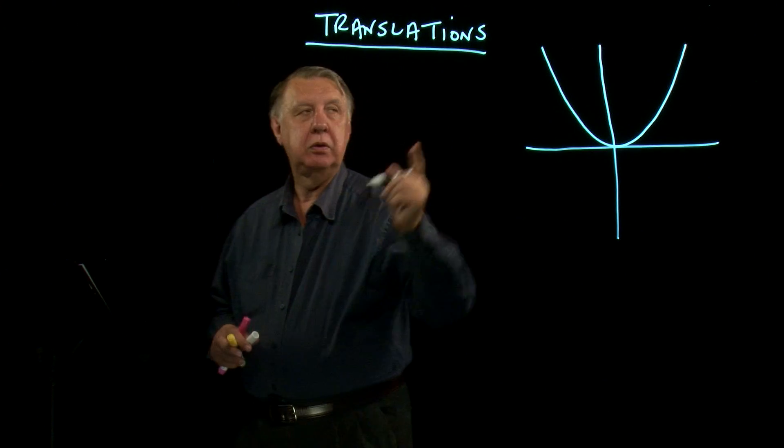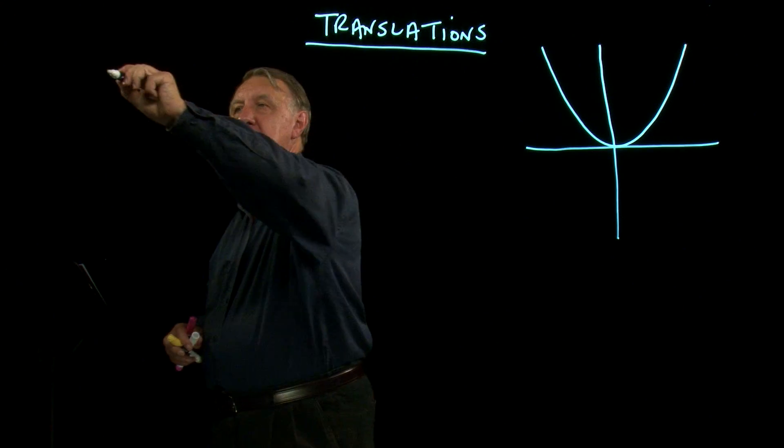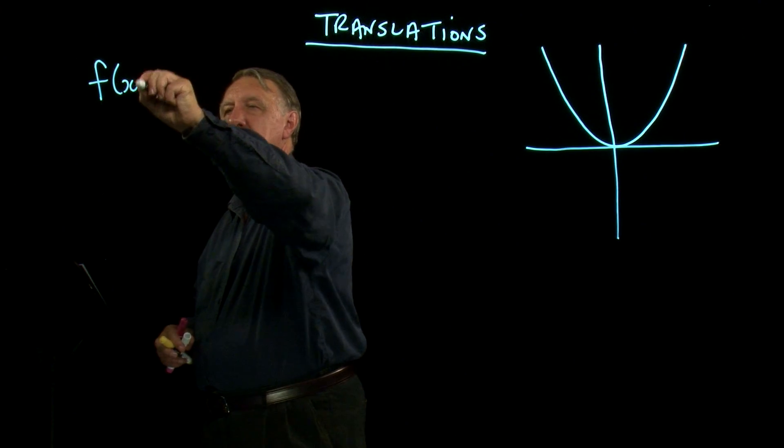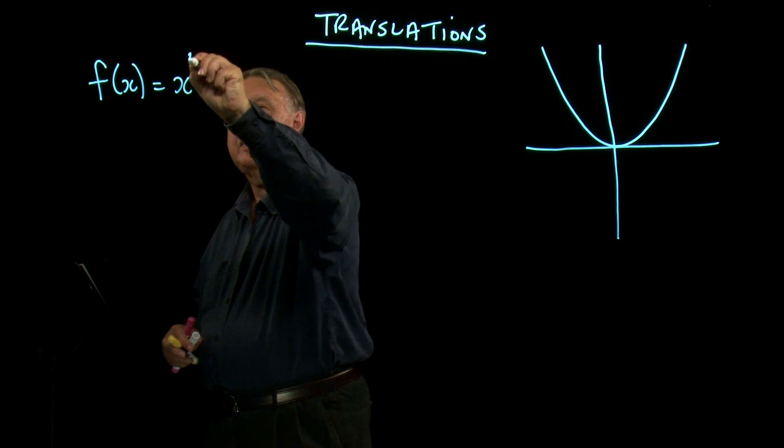Now, a graph here is very simply the graph of function x equals x squared.